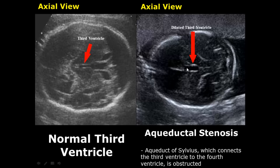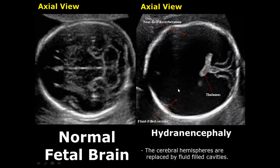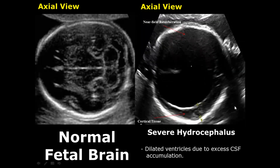The normal third ventricle has a slit-like appearance, whereas when dilated it will have a rectangular appearance. Hydranencephaly is a rare condition in which the cerebral hemispheres are replaced by large fluid-filled cavities — no brain tissue is seen here, with only minimal visualization of the thalami. One way to distinguish hydranencephaly from severe hydrocephalus is the presence of some cortical tissue in severe hydrocephalus.